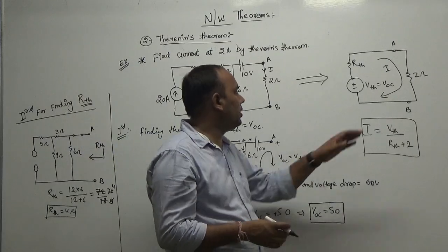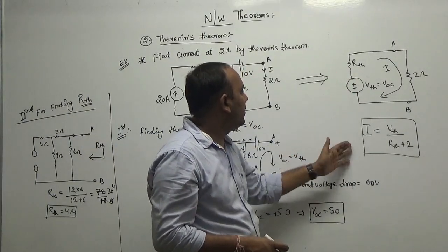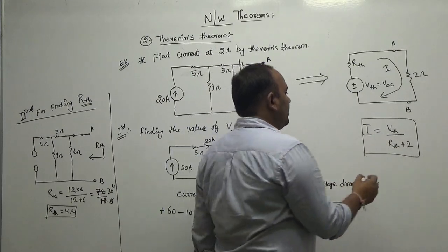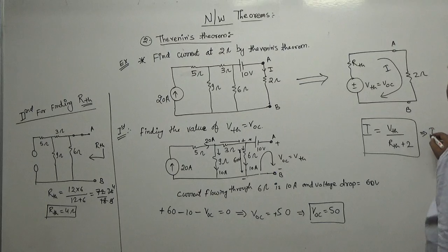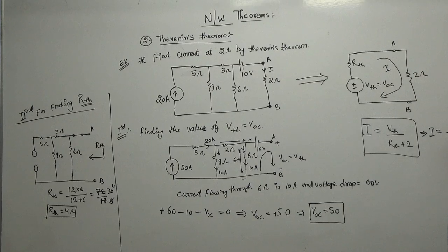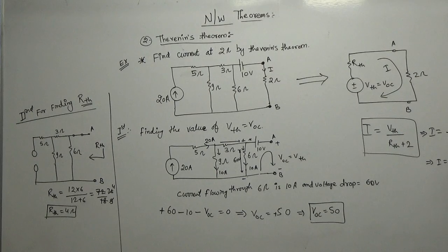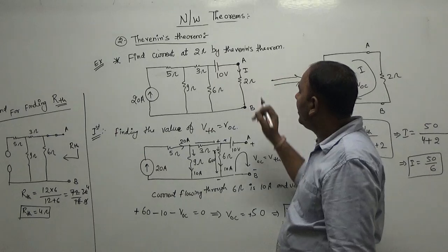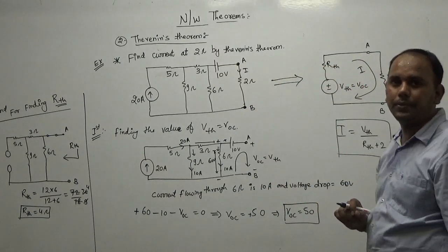Now, coming back to the initial part: I equals Vth divided by Rth plus 2. We can say current I equals Vth which is Voc equals 50, divided by Rth which is 4, plus 2. So our I will be 50 upon 6. This is the method to find the value of current across any network element using Thevenin's theorem. Thank you.